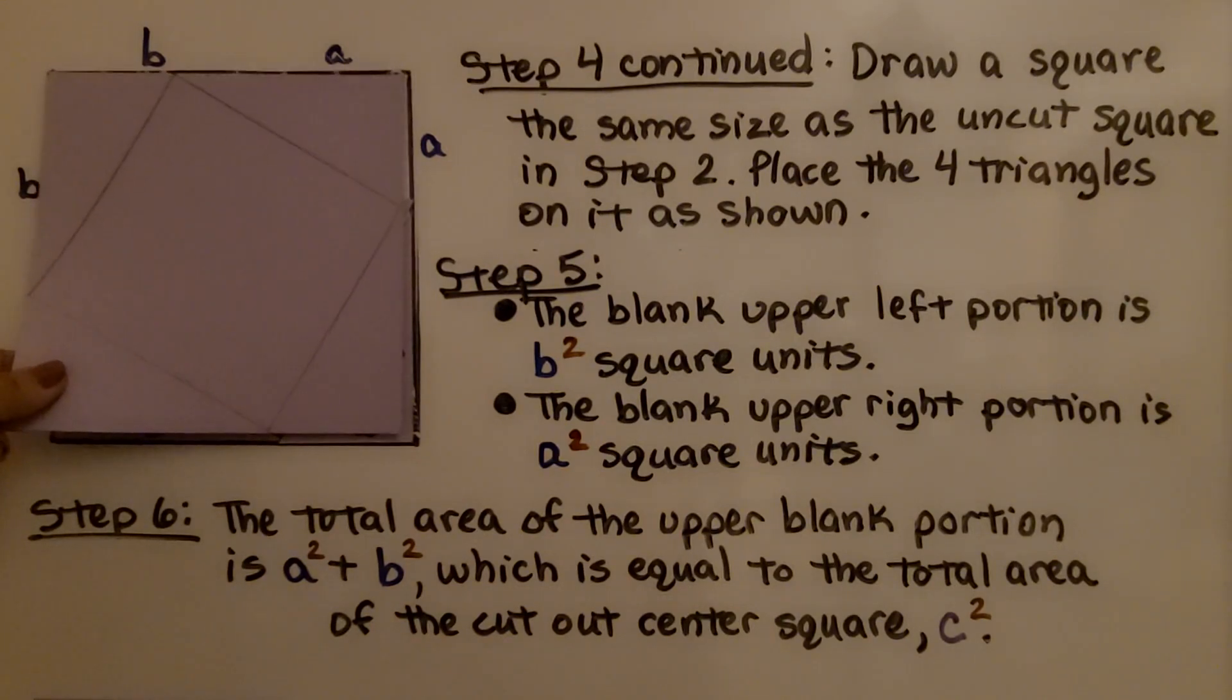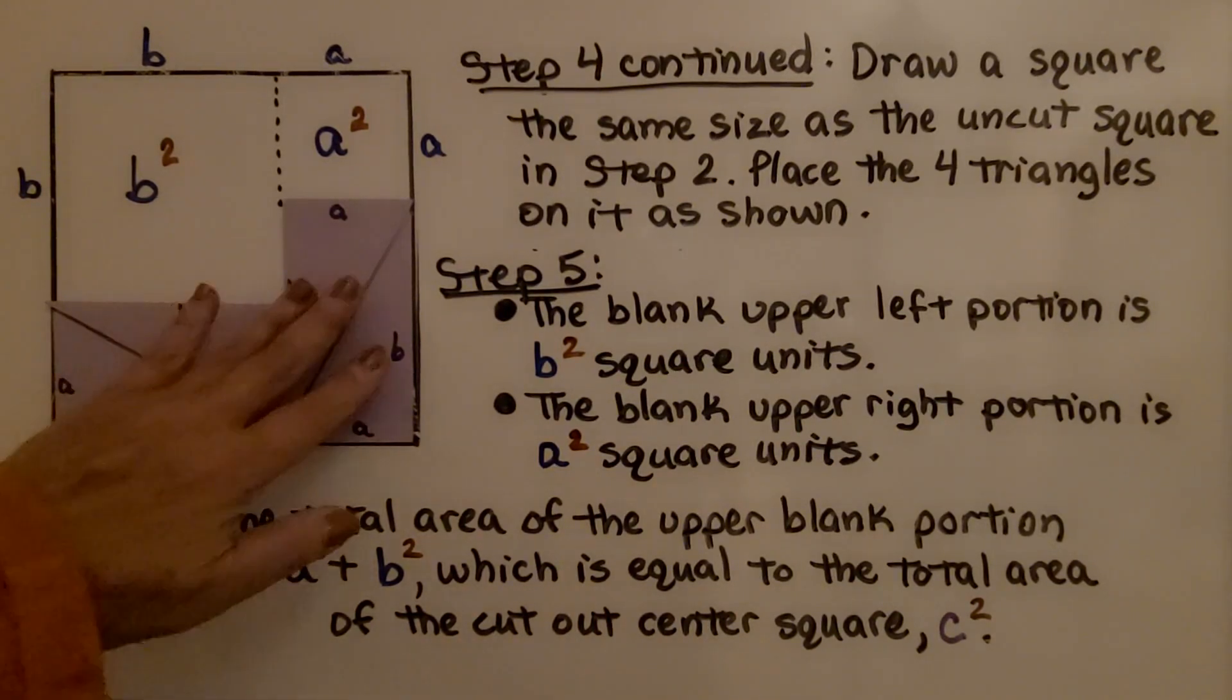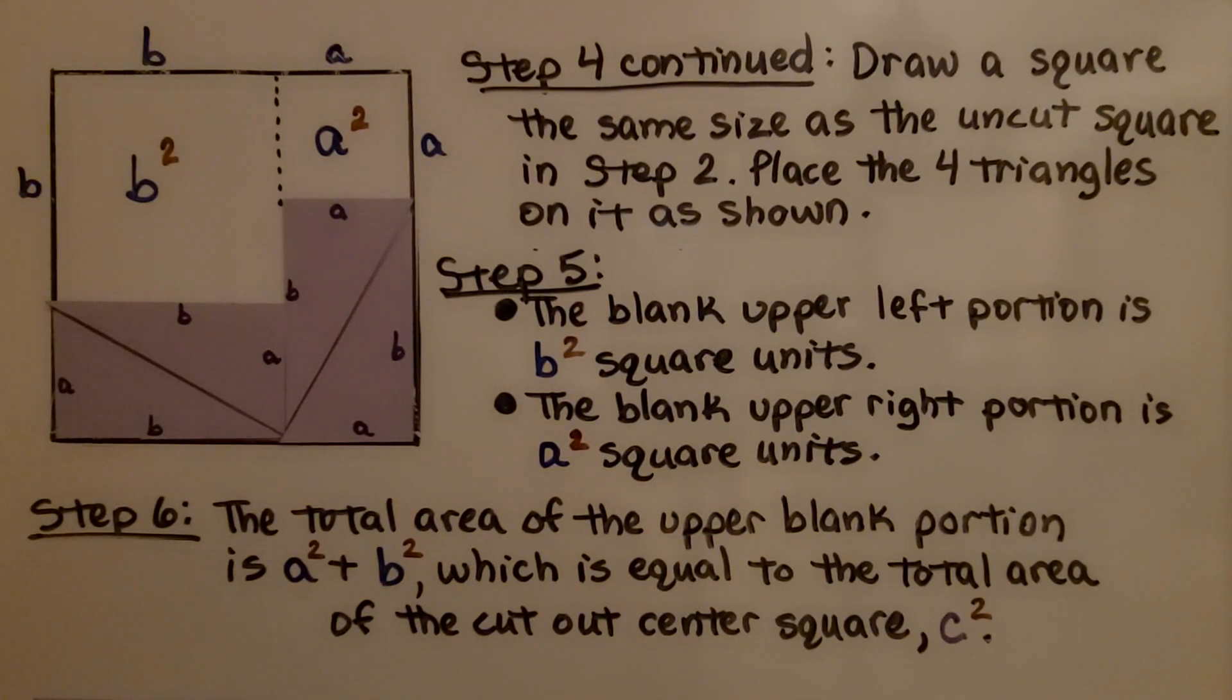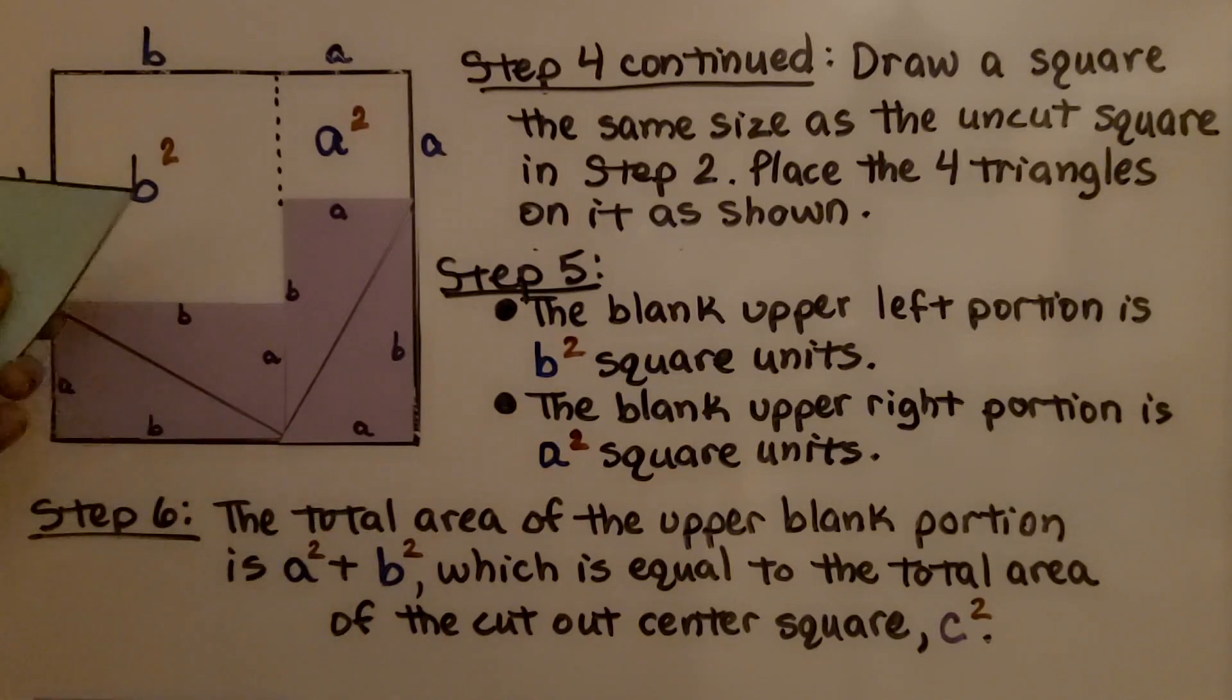We place the four triangles on it as shown. I've put two here to make a rectangle and two here to make a rectangle. The blank upper left portion is b square units. We've got b times b. If you look at these pieces, here we've got one, and we've got b is the long side, right? Well, this side is the length of b. So this is b, and if I turn this, this length is b.